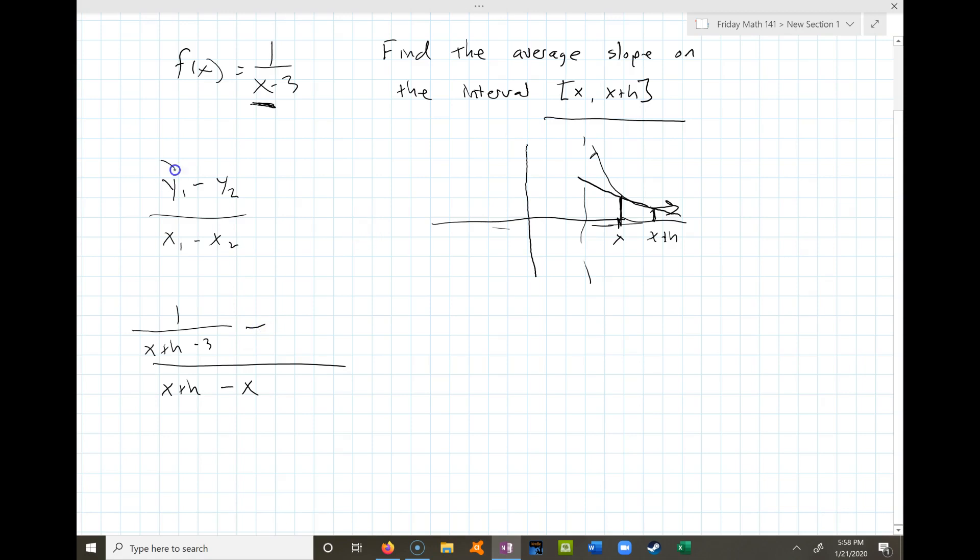I'm just replacing the x with x plus h. And then minus, so that right there is my y1. Then my y2 is going to be the y coordinate that corresponds to x. But of course, x is just x, so that means this would just be one over x minus three. So that's the initial setup of the problem. Then it just comes down to doing the right algebra to simplify it.